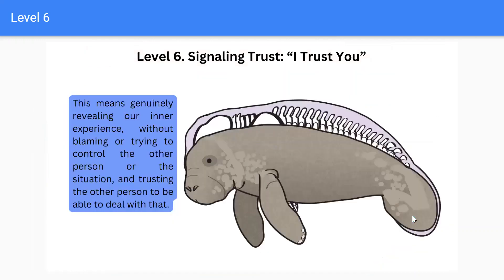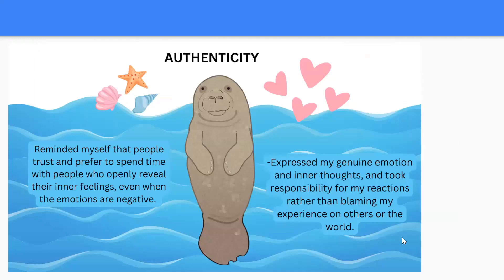Level 6: Signaling Trust — 'I trust you.' This means genuinely revealing our inner experience without blaming or trying to control the other person or the situation, and trusting the other person to be able to deal with that. Note if you reminded yourself that people trust and prefer to spend time with people who openly reveal their inner feelings, even when the emotions are negative, and expressed your genuine emotion and inner thoughts, taking responsibility for your reactions rather than blaming your experience on others or the world.